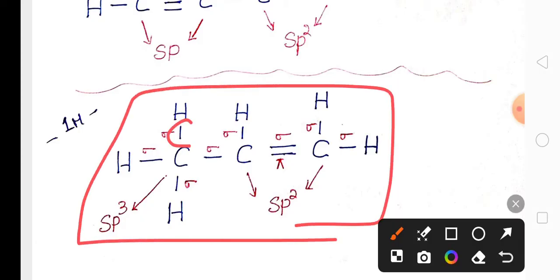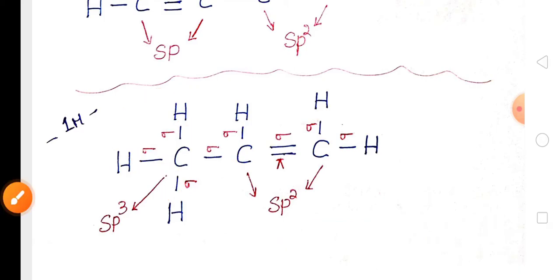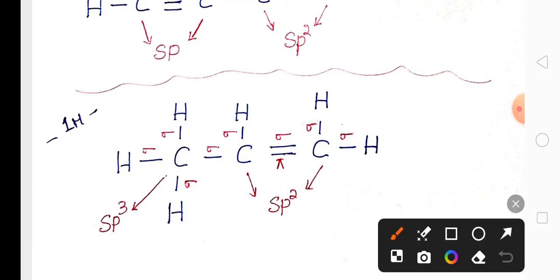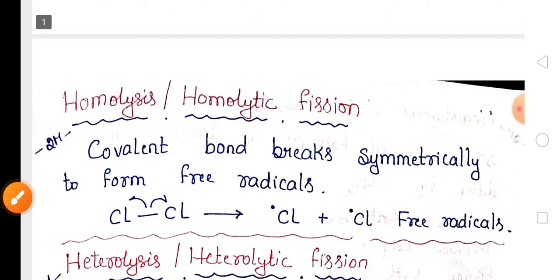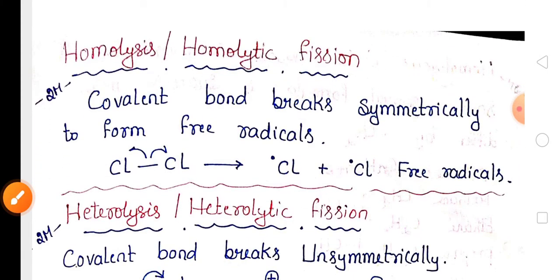Wherever you find a single covalent bond, that will always be a sigma bond. Wherever you find a double bond or triple bond, one will be sigma and the remaining bonds will be pi bonds.